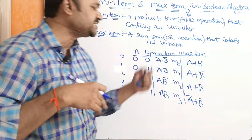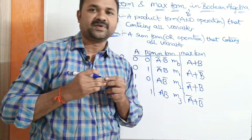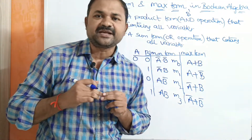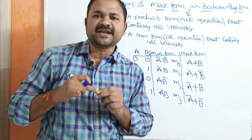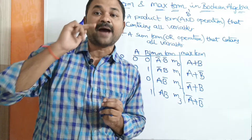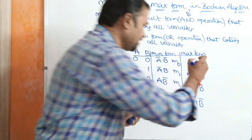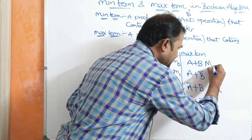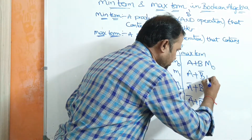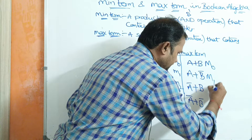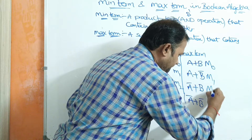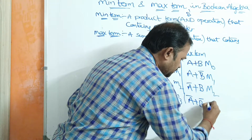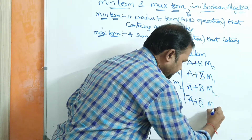Now let us see how we can represent maxterms. A maxterm is represented with capital M. The position numbers are the same: M0, M1, M2, M3.